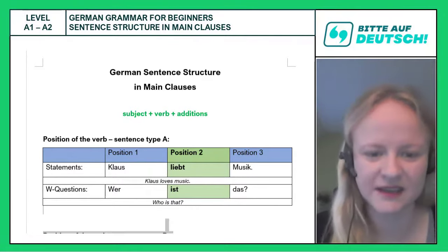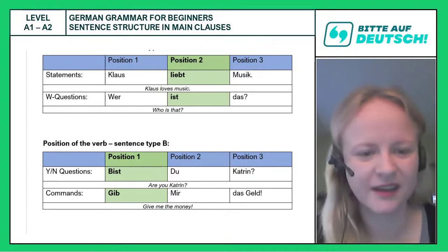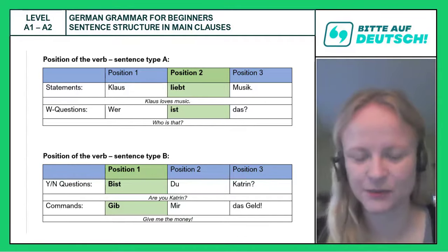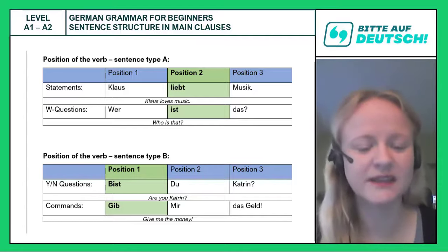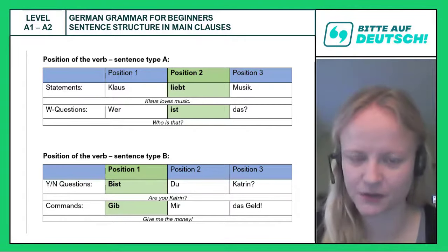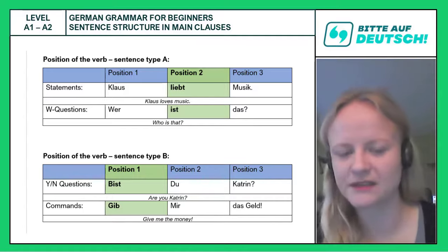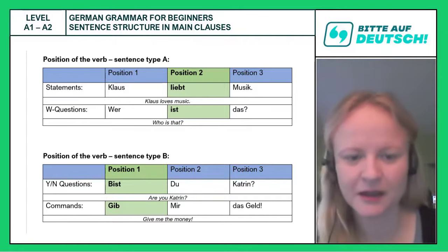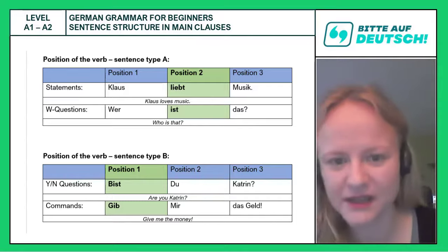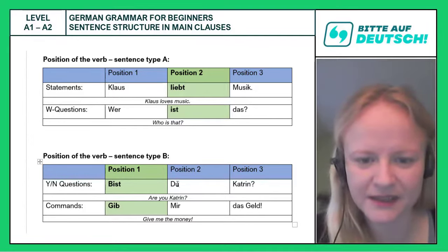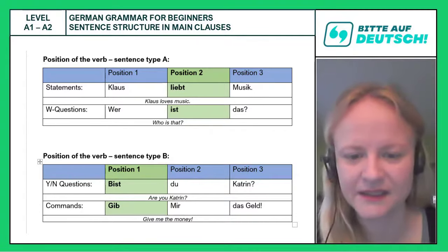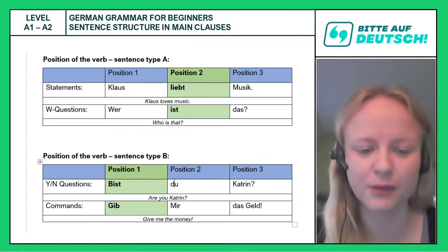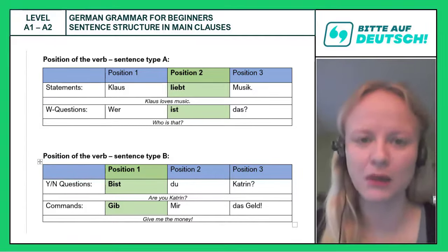Now I would like to contrast that with sentence type B. In sentence type B, the position of the verb is not in the second but in the first position — we start the sentence with the verb. That is normally the case when we ask yes/no questions, meaning closed-ended questions where you typically only answer with yes or no. For example: 'Bist du Katrin?' meaning 'Are you Katrin?' 'Bist' is the conjugated form of the verb 'to be,' 'du' is second person singular, and 'Katrin' is in the third position. Note: we only use capital letters for nouns and names like Katrin.